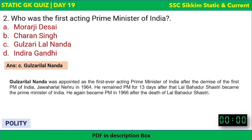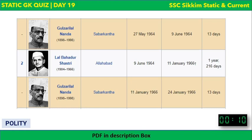Gulzarilal Nanda served as acting PM twice: first from 27 May 1964 to 9 June 1964 — 13 days — after Nehru's death, and again for 13 days in 1966 after the death of Lal Bahadur Shastri. So he was acting Prime Minister of India two times.